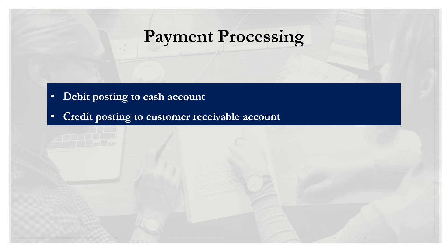The second thing it's going to do is make a credit posting to the customer's receivable account. It sounds like something the customer might receive, but the receivable account is the account representing money we have coming in from the customer — it's what we need to collect from them. Anytime within SAP or ERP when we talk about the customer receivable account, that is money owed to us.